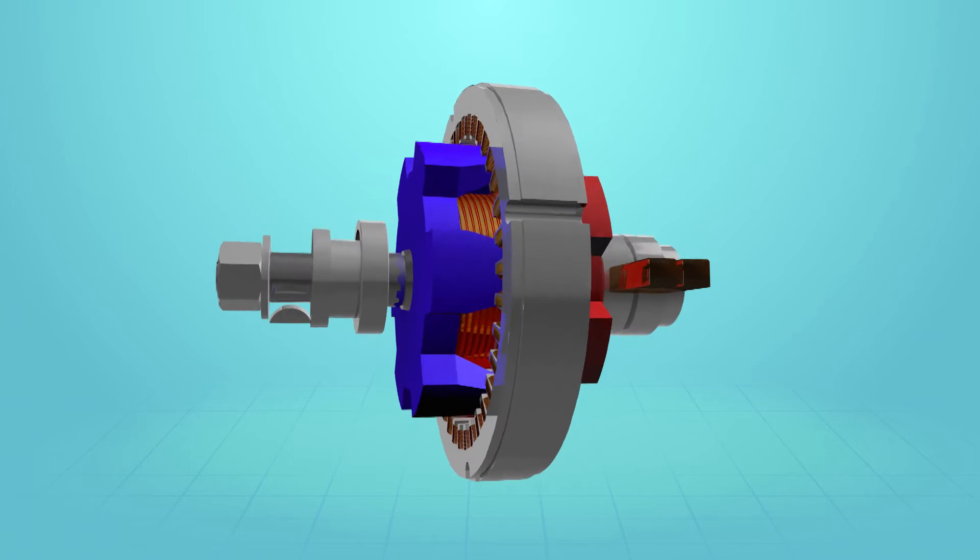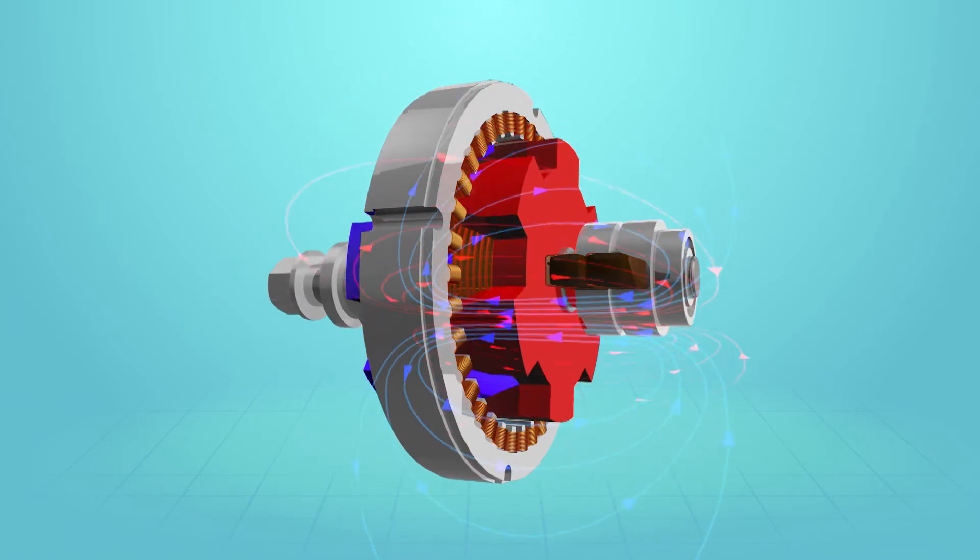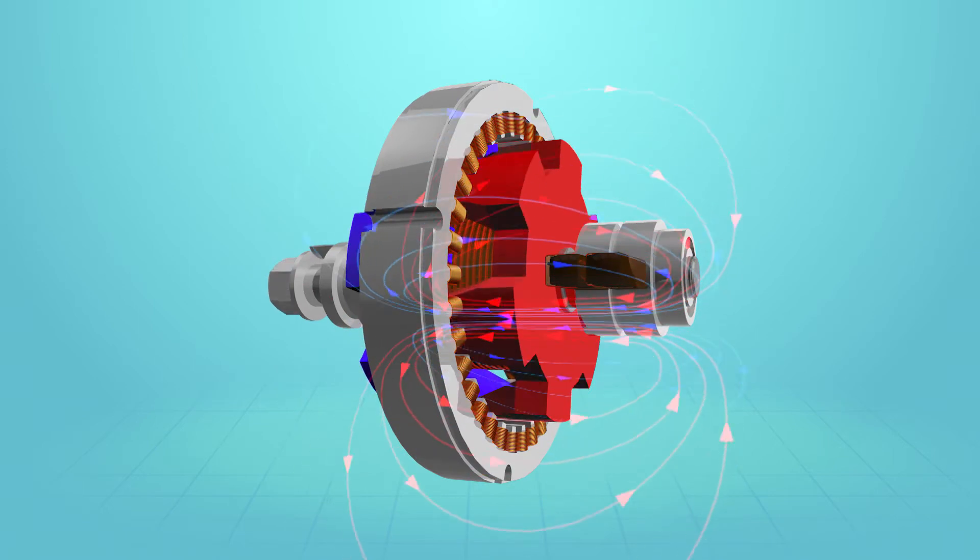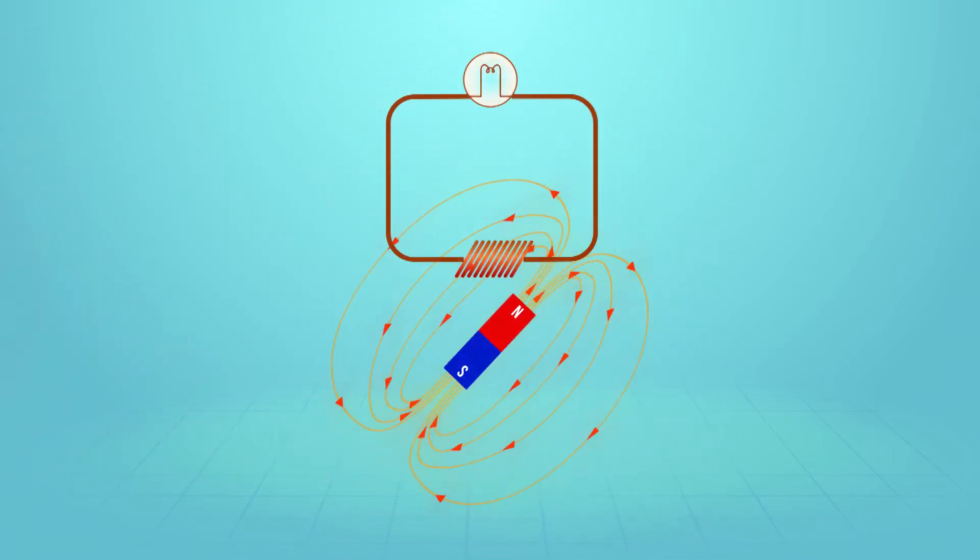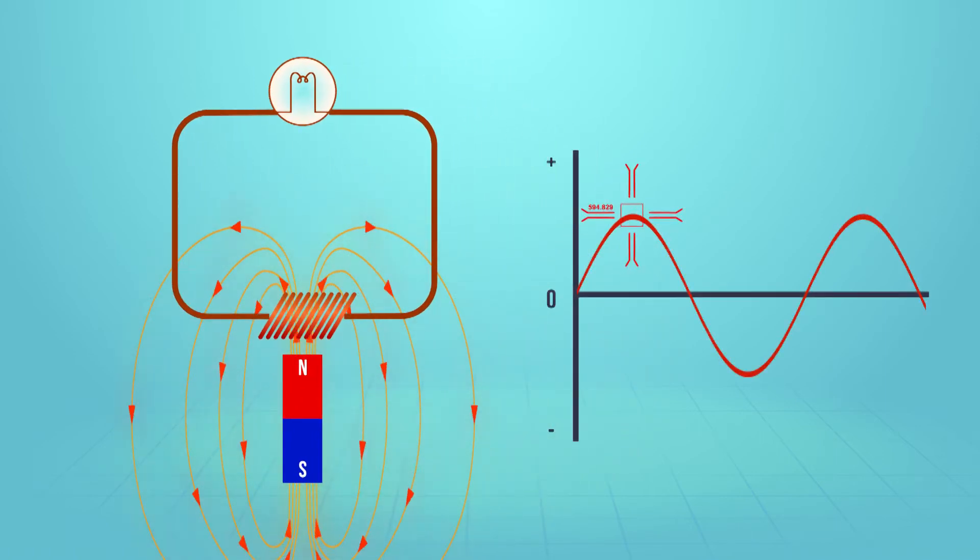AC is traditionally produced using a rotating magnetic field. This induces an alternating current in a conductor or set of windings. When observing a single-phase AC generator, we can see that as one pole of the magnet rotates past the winding, current is induced into the winding in one direction only.